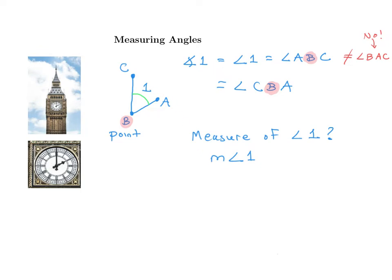Instead of first figuring out the measure of angle 1, which is the angle created by 2pm, what is the angle at 3pm? If it is 3pm, the minute hand points to 12 and the hour hand points to 3. It turns out that is a 90-degree angle — a right angle, referenced by the square symbol. So from 12 to 3, we're dividing this into 3 equal pieces.